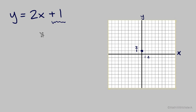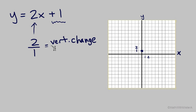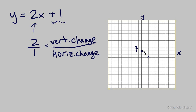Next, we'll use the slope, which we know is 2. The slope is the rate of change vertically compared to horizontally, so it's useful to look at slope as a fraction. The whole number 2 equals 2 over 1. So we'll see a vertical change of 2 units for every 1 unit of horizontal change. That means that from our y-intercept, we can go up 2 and to the right 1, and we'll find another point on the line.